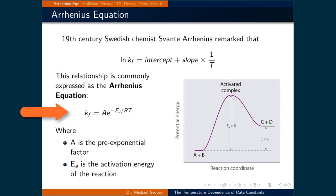This relationship is commonly known as the Arrhenius equation, and when written in its more common form it reads: the rate constant Kf is equal to A times e raised to the power of negative Ea over RT, where A is a constant of proportionality and Ea is the activation energy.